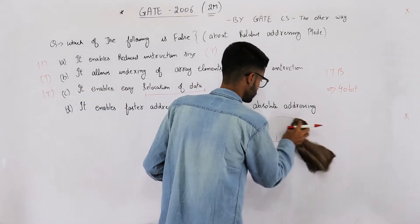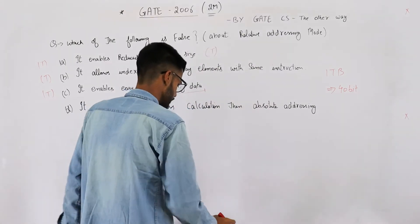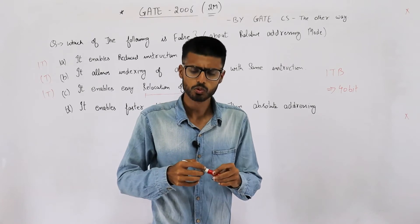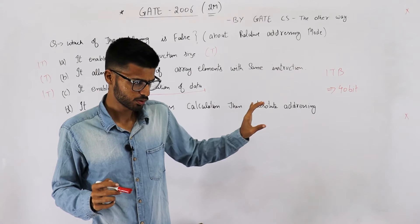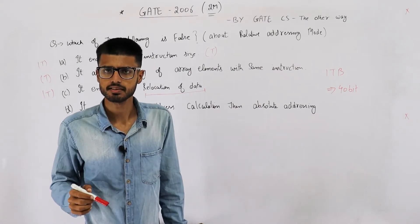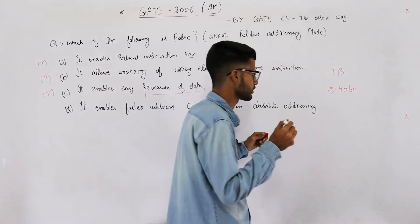First of all, relocation of data means when the operating system decides to move your program in RAM. Now to compensate that shift, you need to change the addresses in the program. So say you have used some goto instructions.